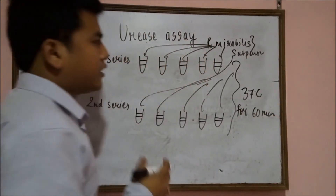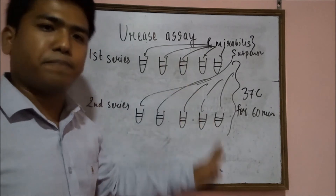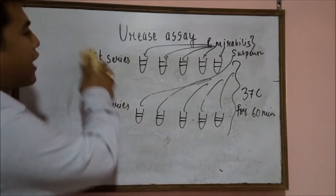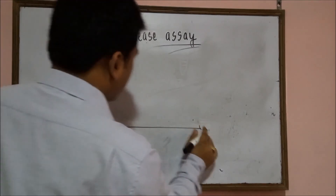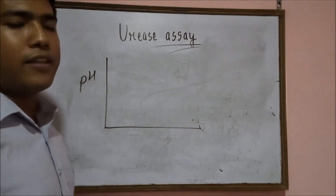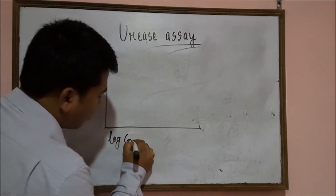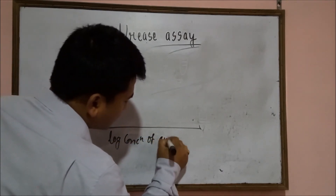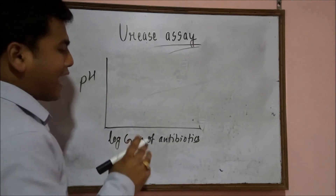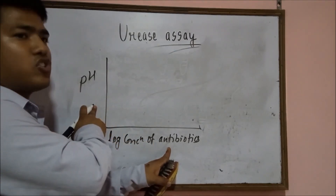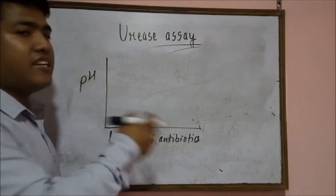Measure the pH of the medium after incubation at 37 degrees centigrade for 60 minutes. Incubate the test tubes for 60 minutes at 37 degrees centigrade, then measure the pH. Next, draw a calibration curve. On the Y-axis represent the pH of the medium detected after incubation, and on the X-axis represent the log concentration of the antibiotics — that is, the log concentration of the calibrator. The concentration of antibiotics and the pH are inversely proportional: as antibiotic concentration increases, the pH decreases.